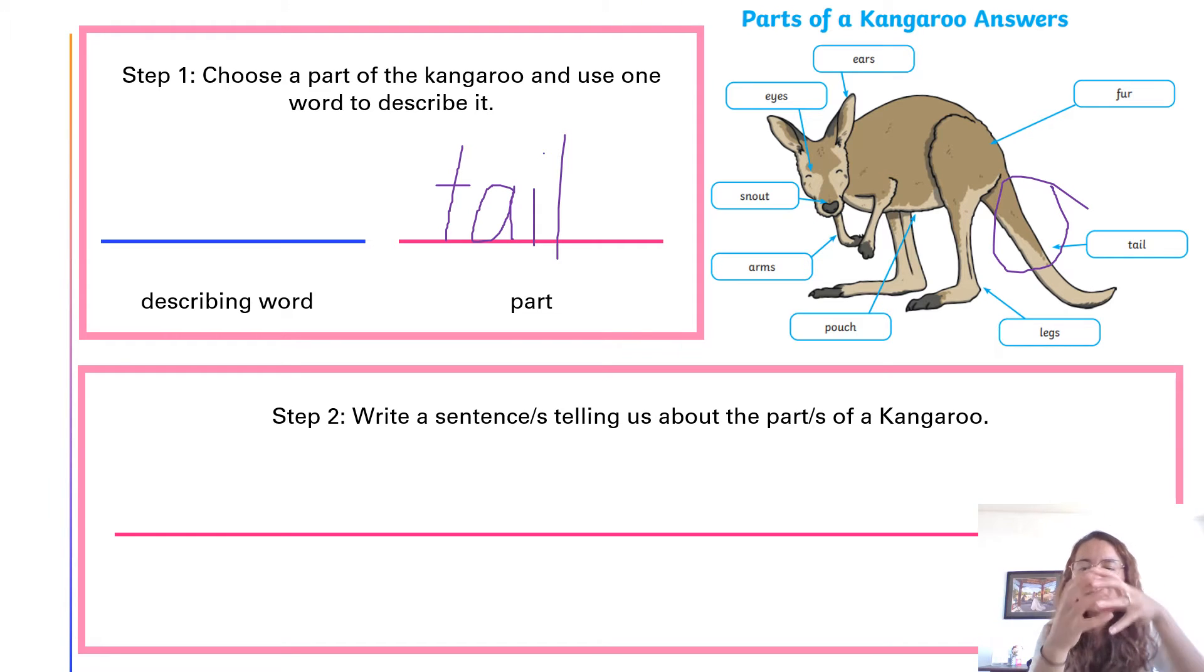And then I'm going to think of a describing word. Something that describes that tail. If I look at the tail, I automatically see it's very long. So I might write long. Long tail. There it is.